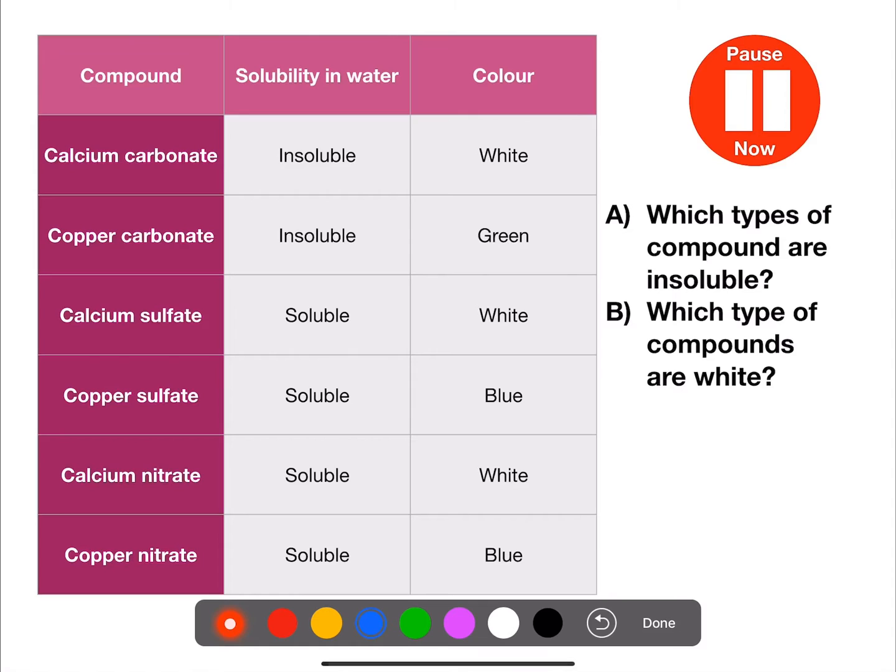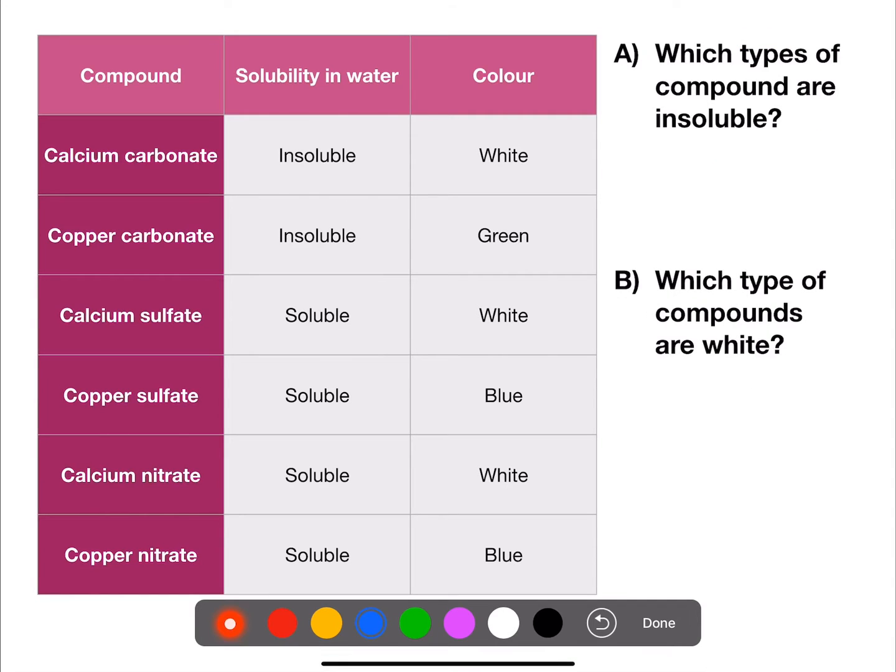Pause the video now and try and extract the information from the table. So we have different compounds in the table. We have three which contain calcium, three which contain copper, two which contain carbonate, two which contain sulfate, and two which contain nitrate.